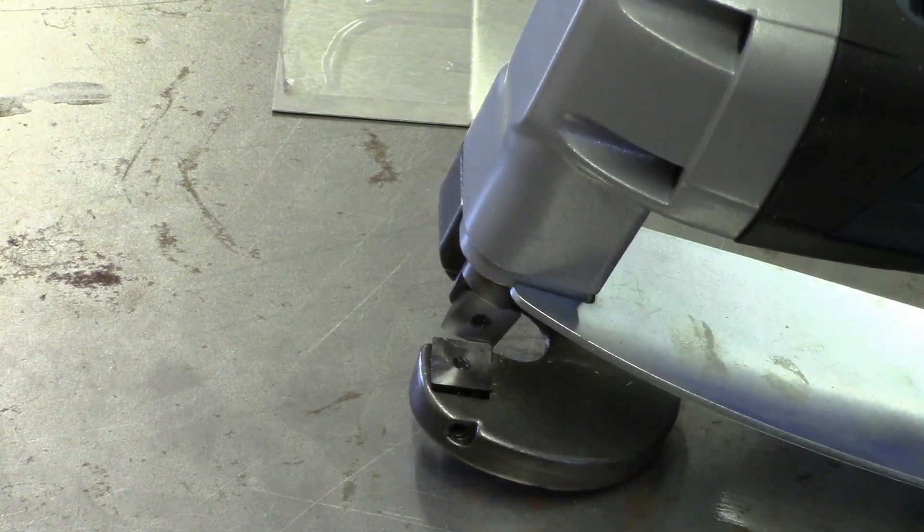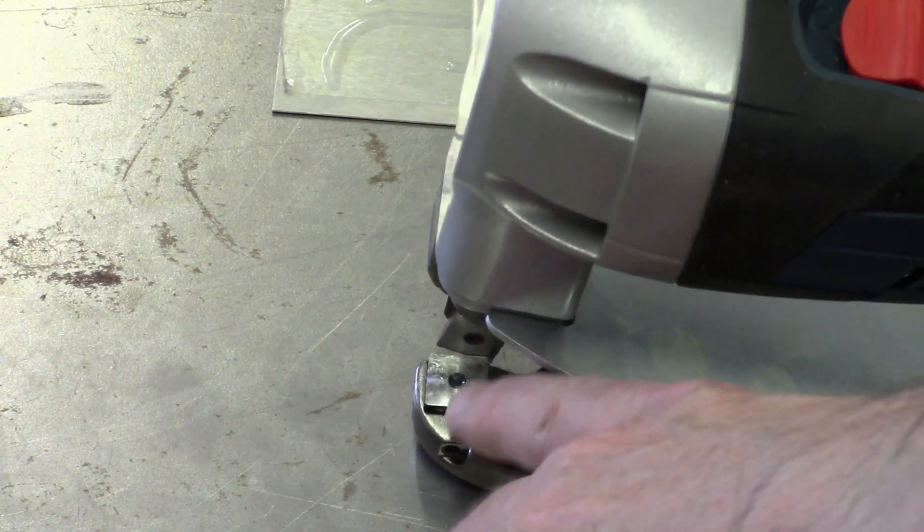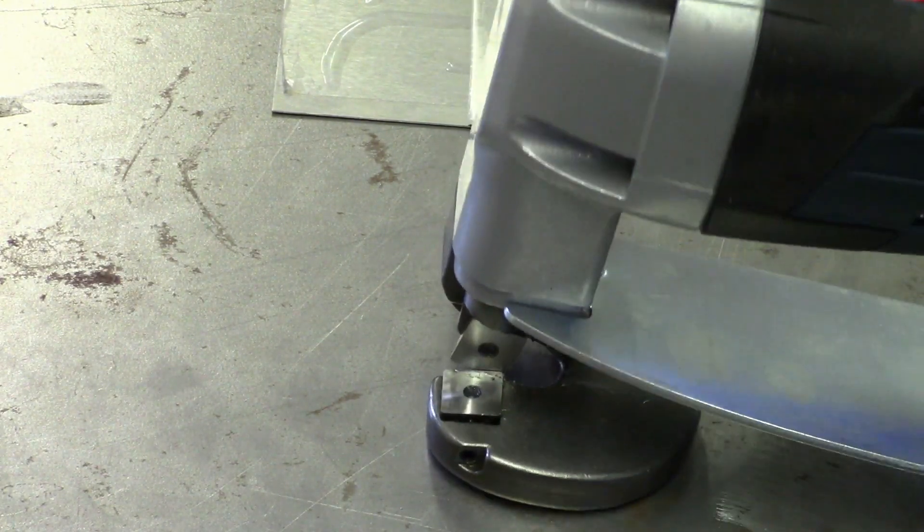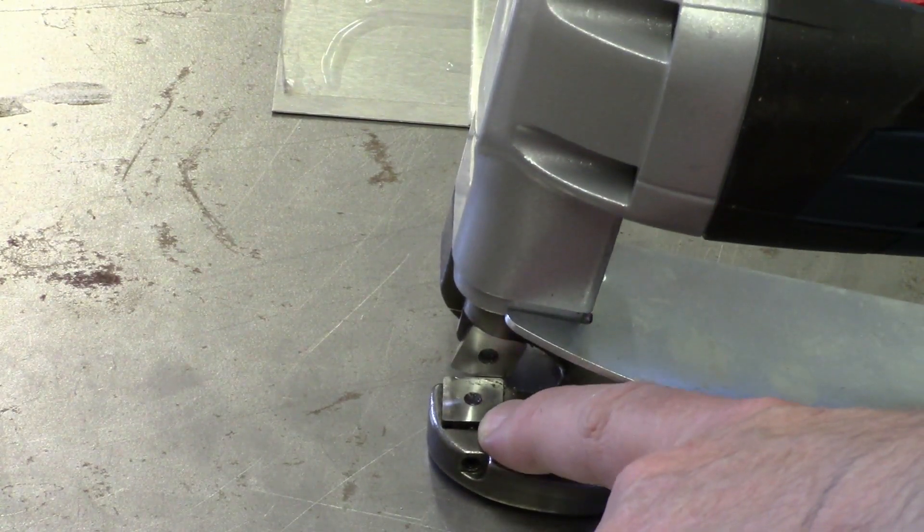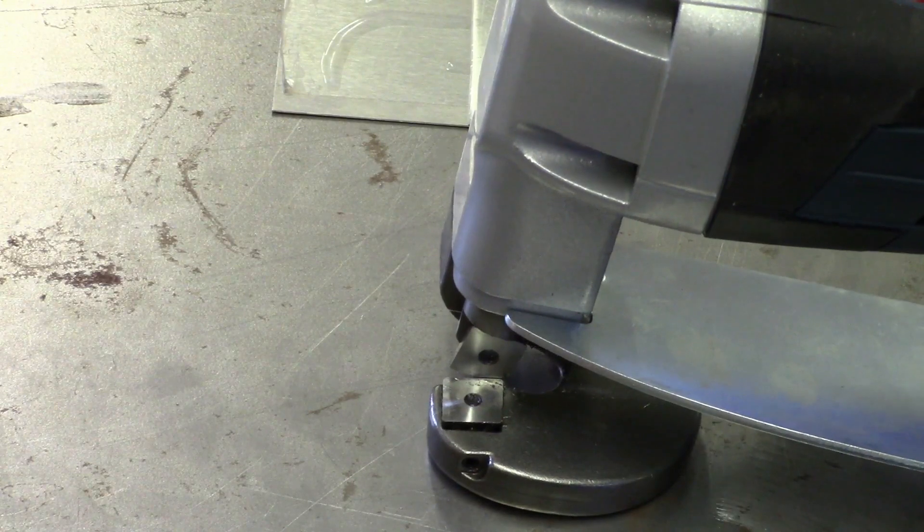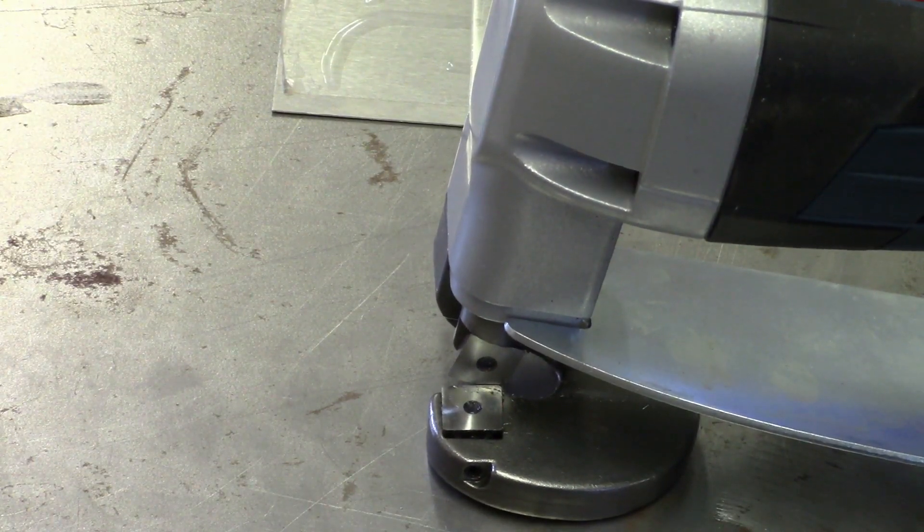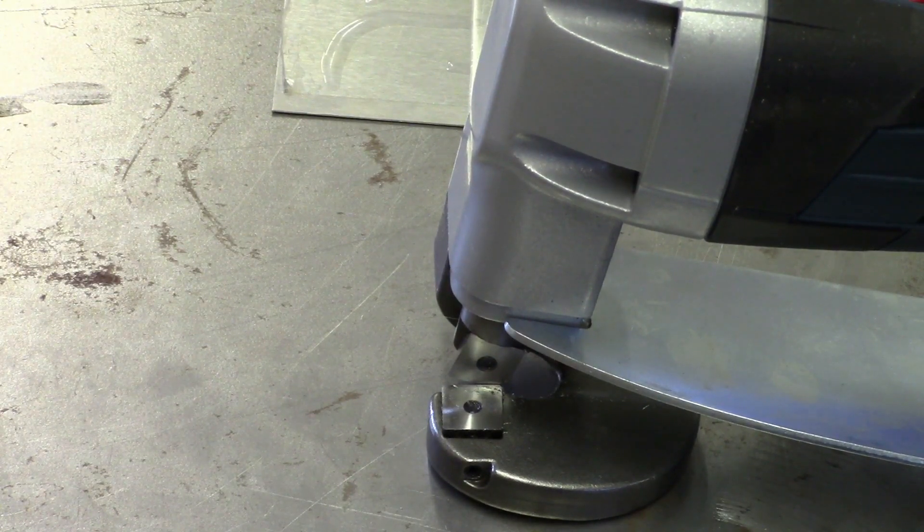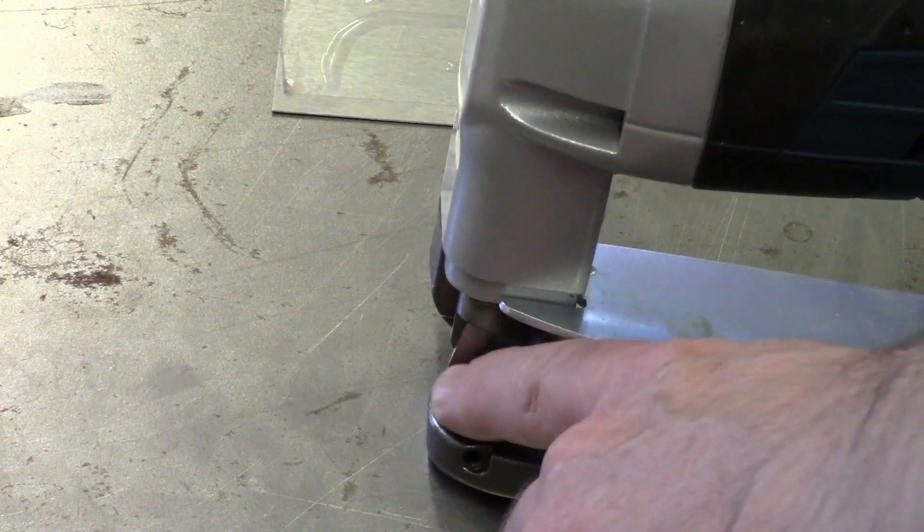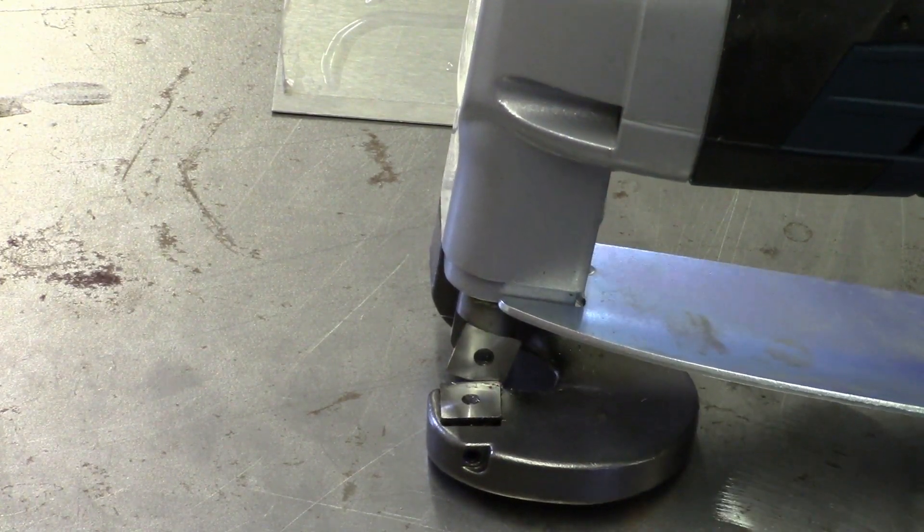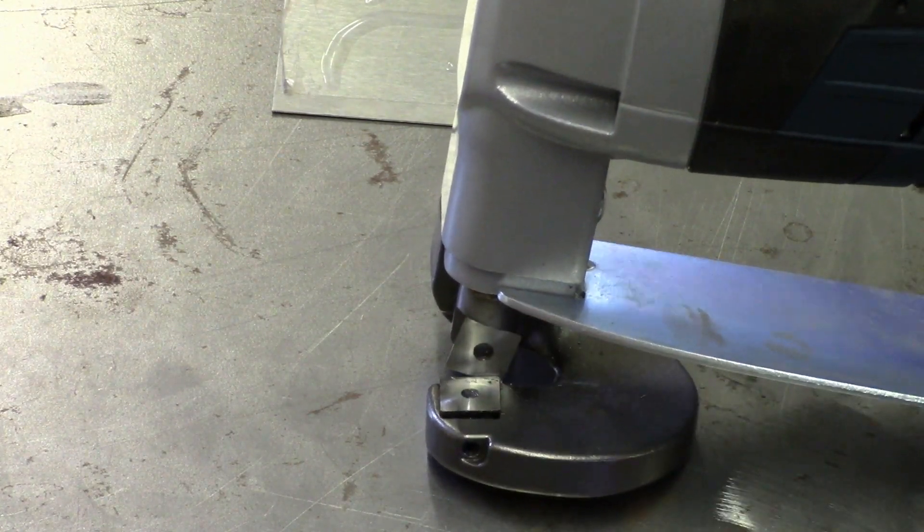You've also got a similar type of setup on the bottom, and it looks like the blades are the same. I'm not sure if these types of blades are any kind of standard carbide type insert like you would see with a lathe. But the fact that you can switch these around is nice. On some of the cheaper ones, it's just like a single edge at least for the vertical part.